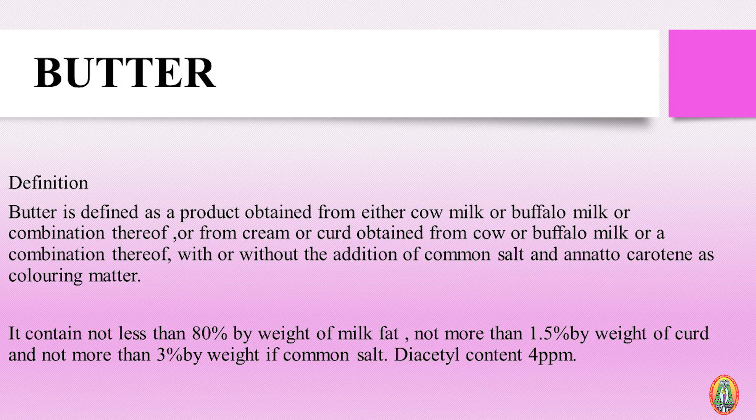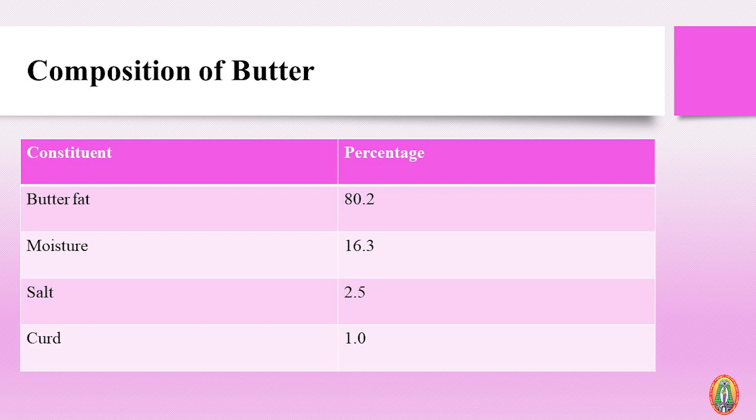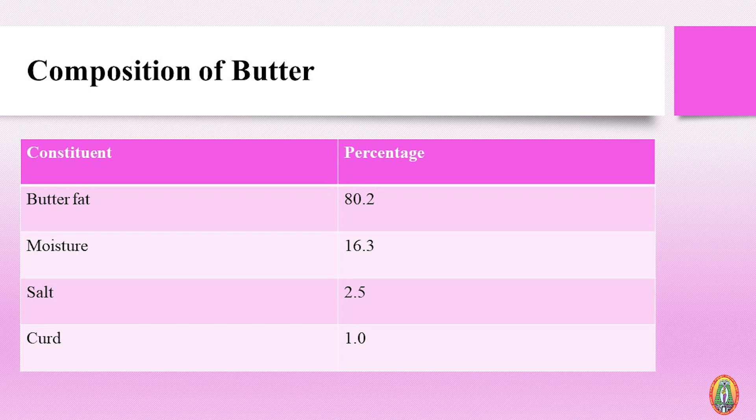Butter is a key product for the dairy industry. Butter is produced from cream obtained from milk. The definition for butter is: butter is a product obtained from either cow milk or buffalo milk, or a combination thereof, or from the cream which is obtained from the same. This butter should have a minimum of 80% milk fat, curd content of 1.5%, added common salt not exceeding 3%, and the diacetyl compound, which is a flavor compound, is accepted up to 4 ppm.